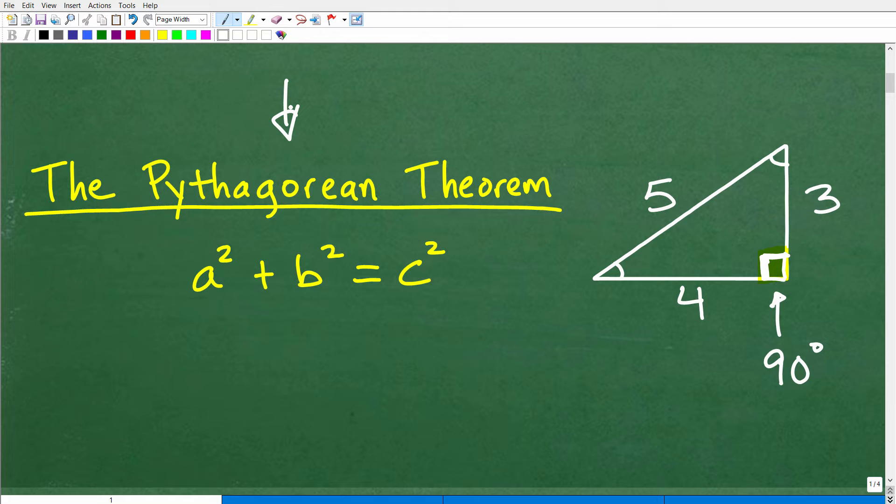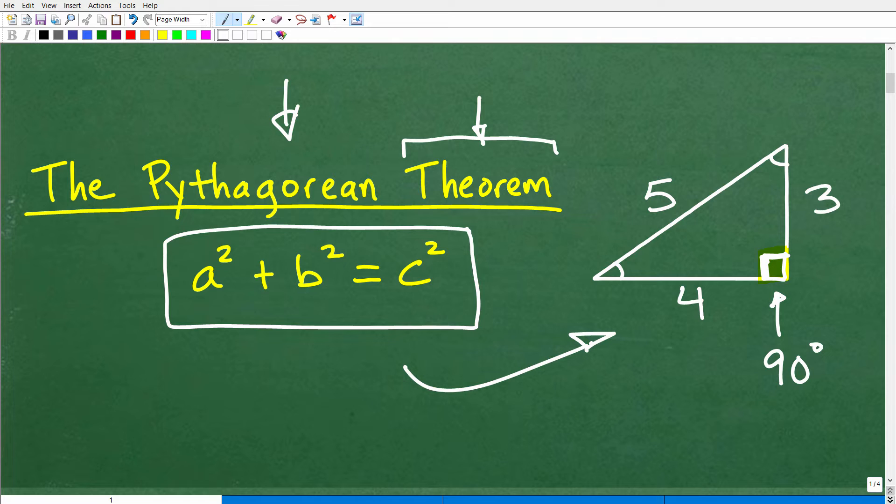So the way we're going to answer this question is we have to use something called the Pythagorean Theorem. This is critical. This is probably one of the most important rules in mathematics. And this is called a theorem, which is basically a fancy word for a law. But basically what you need to know is that this right here can be proved. So in other words, it's a proven concept. And the Pythagorean Theorem is a squared plus b squared equals c squared. So that's the theorem. Now go ahead and answer the question.